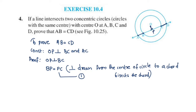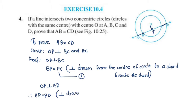OP is perpendicular to AD. Since OP is perpendicular to AD, it bisects the chord AD, giving AP equal to PD. The reason is: a perpendicular drawn from the center of a circle to a chord bisects the chord. This is equation number 2.